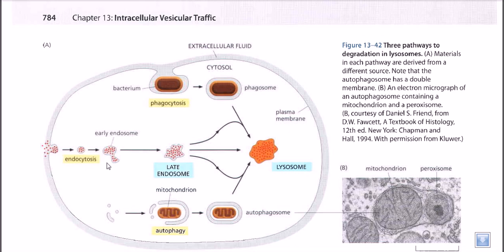As more enzyme-filled vesicles attach to it, it becomes a giant endosome containing lots of enzymatic content along with very low pH and the originally engulfed materials. This fully matured state is finally called the lysosome. So the early endosome — which began as an invagination of the cell membrane — matures into a lysosome after fusion with enzyme-containing vesicles. This lysosome then fuses with autophagosome or phagosome to degrade their contents, releasing the debris, sometimes back into the cytosol.